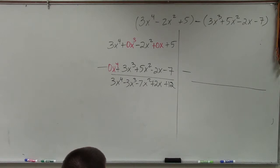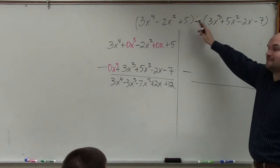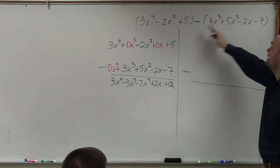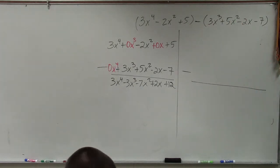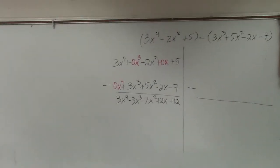How does it give you a positive 2x? That'll be negative. 5 minus a negative 7. That's negative 2. 5 minus a negative 7, so how is it? I'm confused. Okay, I'm going to...